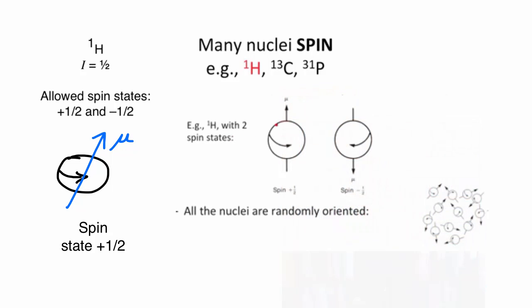And by the right-hand rule, that spin, caused by a spinning charged particle, creates a magnetic moment in one direction or in the other direction.